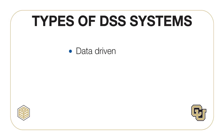Now, let's discuss different types of DSS. Dan Power created a contemporary classification system for DSS where he calls out five types. A data-driven DSS manipulates large amounts of numerical data that is often stored in a data warehouse. These systems use online analytical processing to produce reports, dashboards, and scorecards for business performance measurement. This course will focus on data-driven DSS.